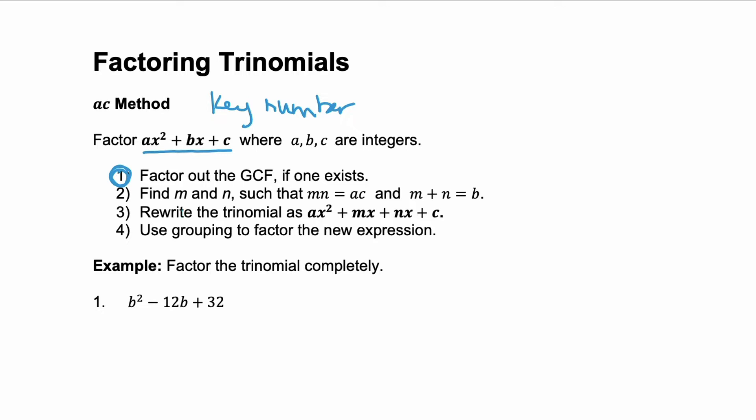Step two is using the AC method or the key number method — we'll go over that with some examples. Step three is using that key number to rewrite your trinomial with four terms. And a polynomial with four terms means you're going to factor with grouping.